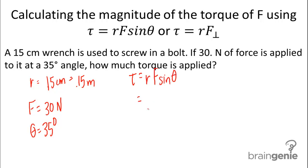When we plug in our information, we get 0.15 times 30 times sine of 35 degrees, and we get a final answer of 2.6 newton meters.